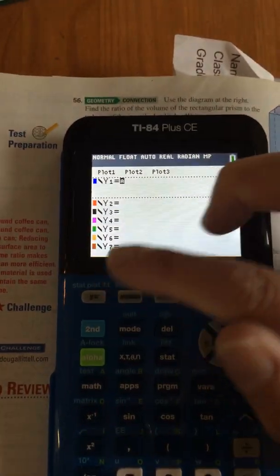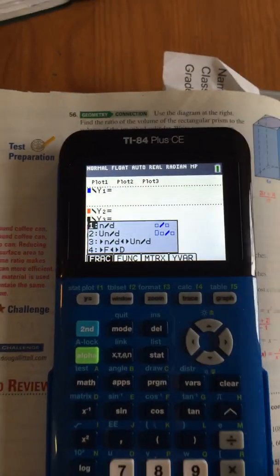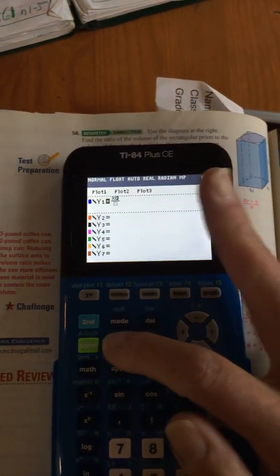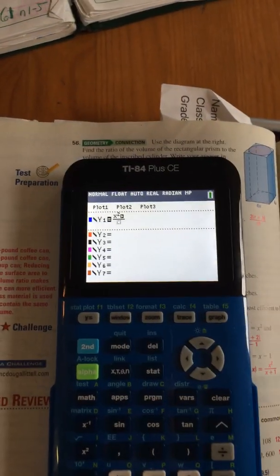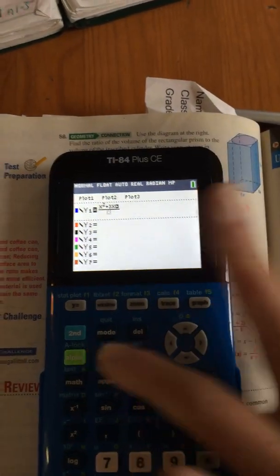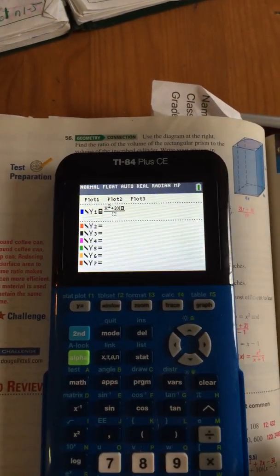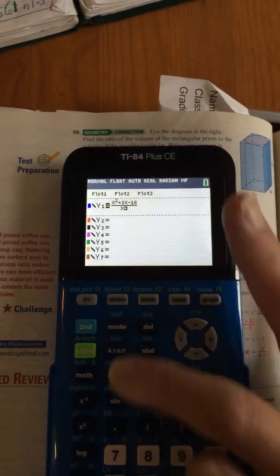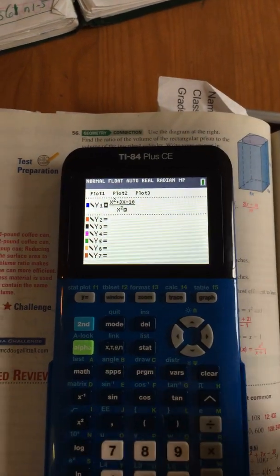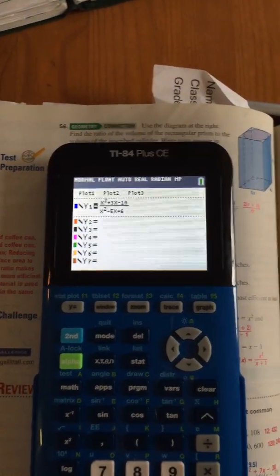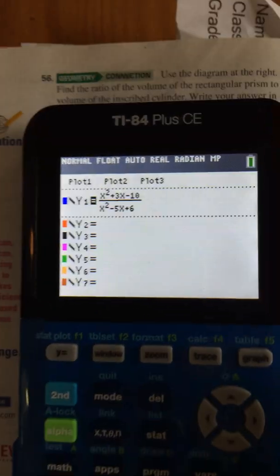But I have the shortcut menu, so I'm going to do alpha y equals, select numerator over denominator, and I'm going to put it in. x squared plus 3x minus 10 over x squared minus 5x plus 6. Okay, so that's my first equation.